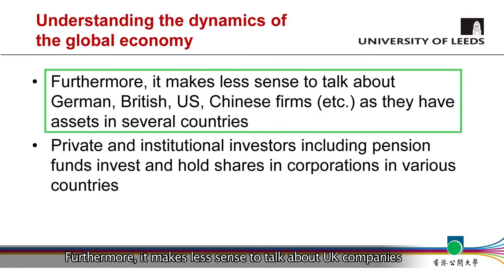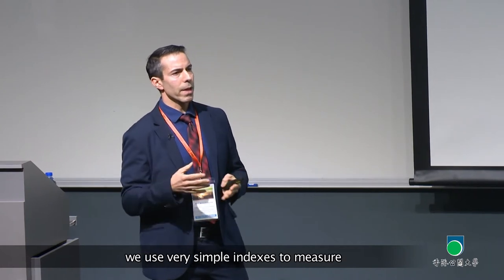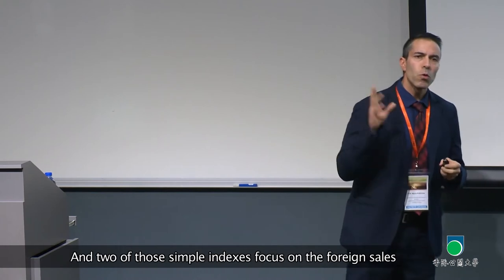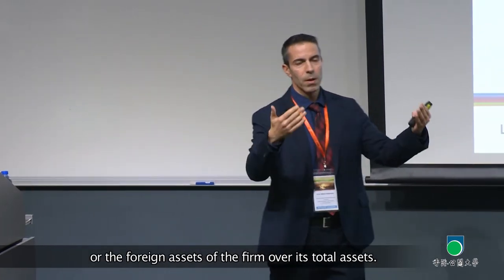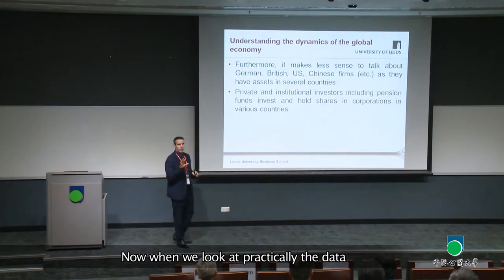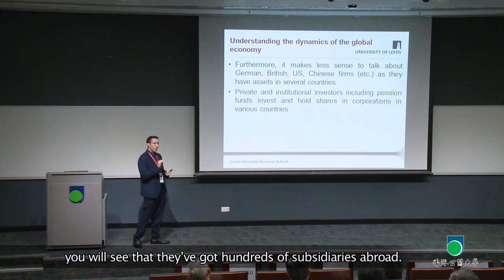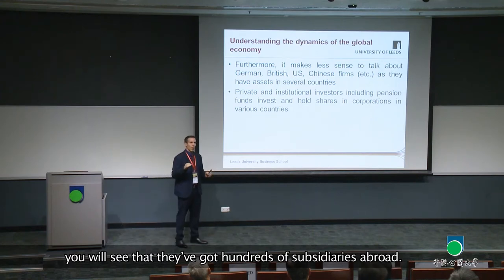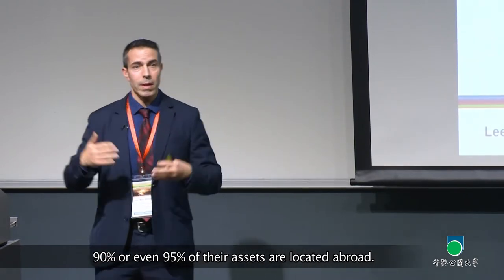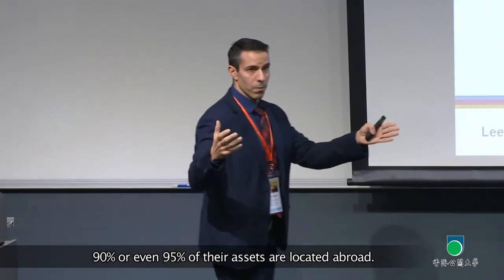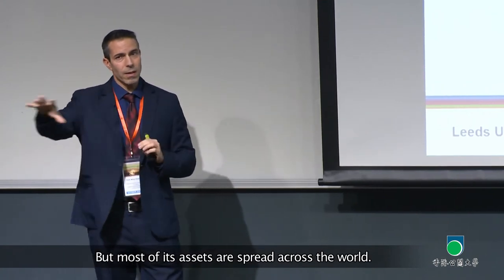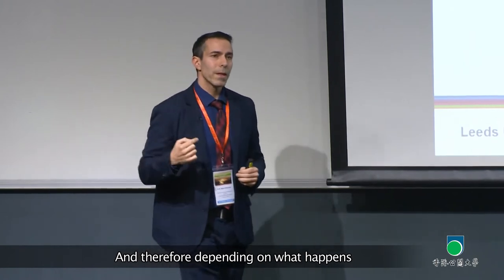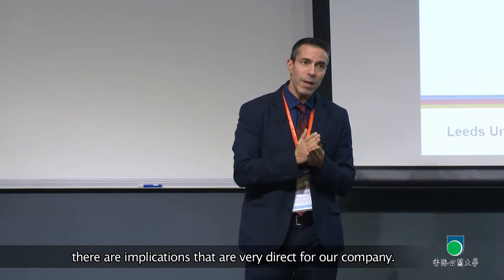Furthermore, it makes less sense to talk about UK, German, or US companies in isolation. In international business, we use simple indices to measure the internationalization of firms — for example, foreign sales over total sales, or foreign assets over total assets. When we look at the data, many companies have hundreds of subsidiaries abroad, and for some, 90 or even 95% of their assets are located abroad. A firm may be headquartered in the UK or US, but most of its assets are spread across the world.